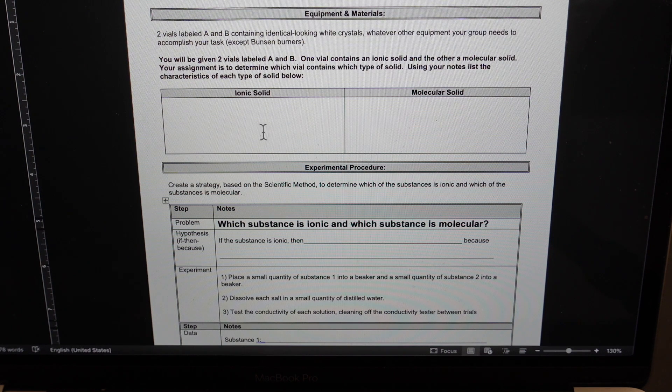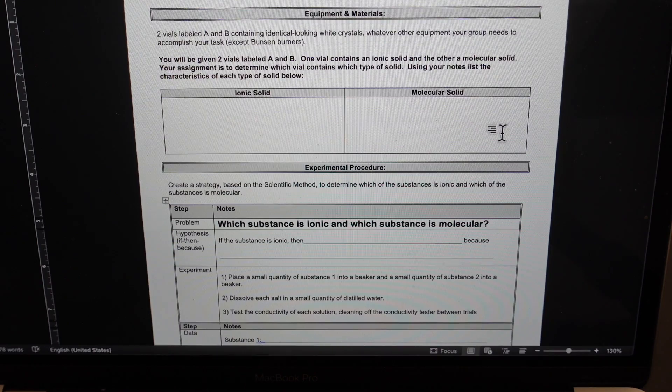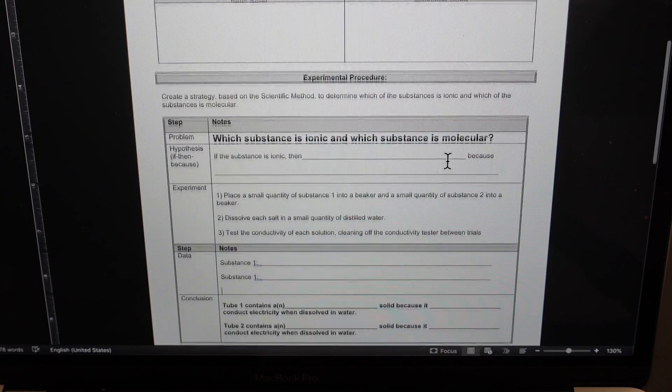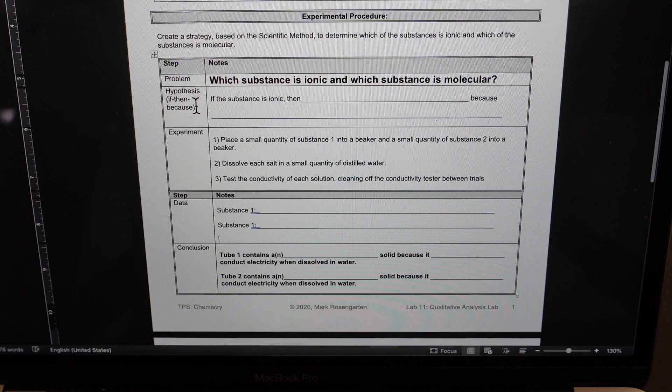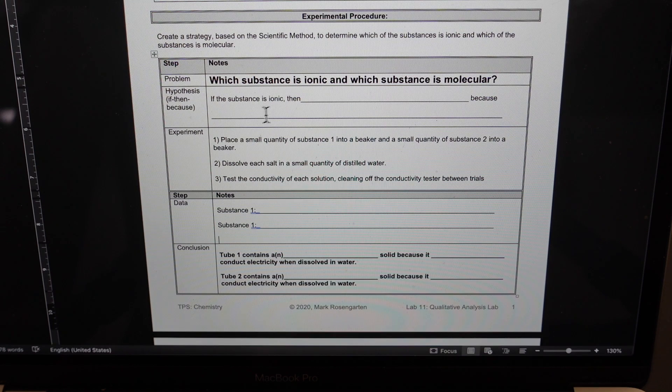Now the first thing you got to do is what are some properties of ionic solids? What are some properties of molecular solids? And then to figure it out, create a hypothesis. If the substance is ionic, then what should happen and why? You're making your prediction.